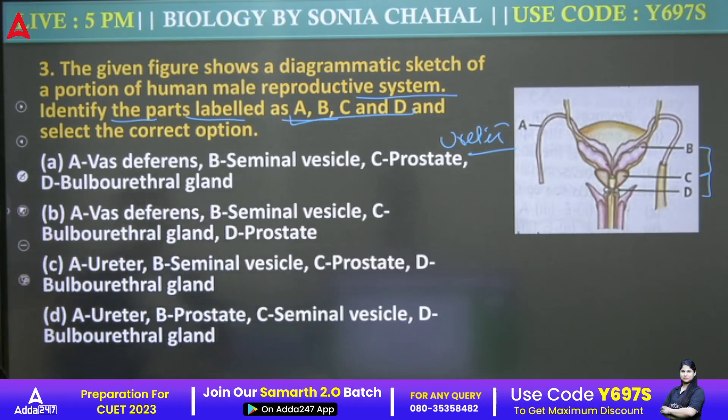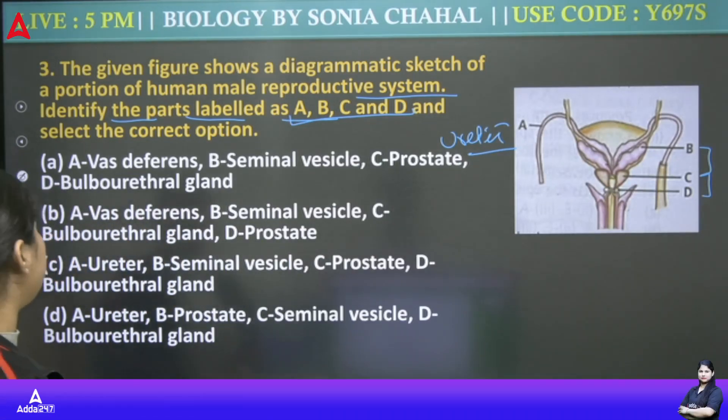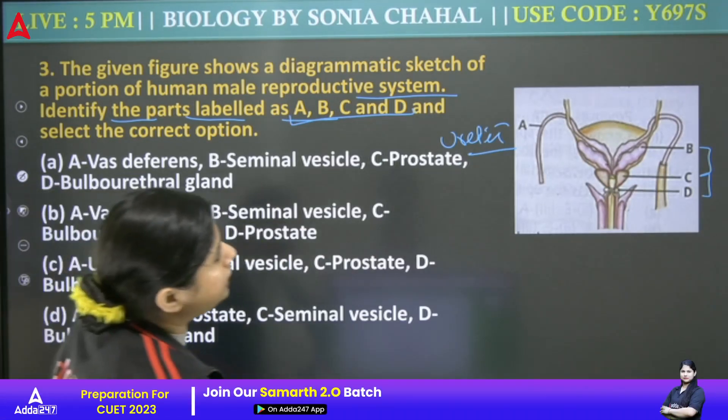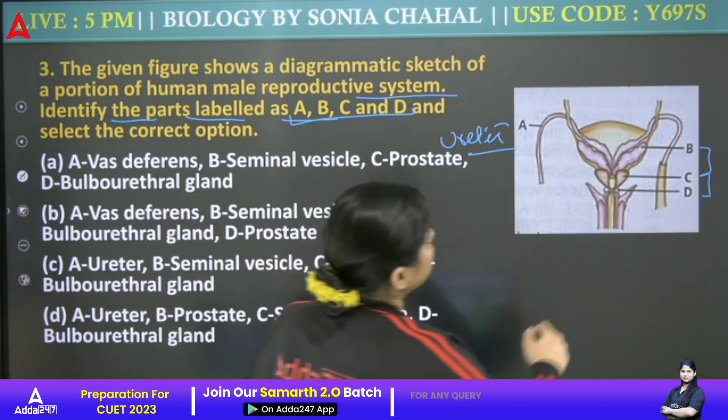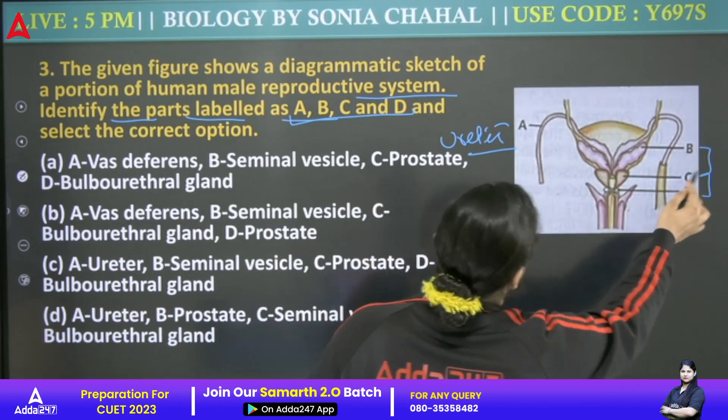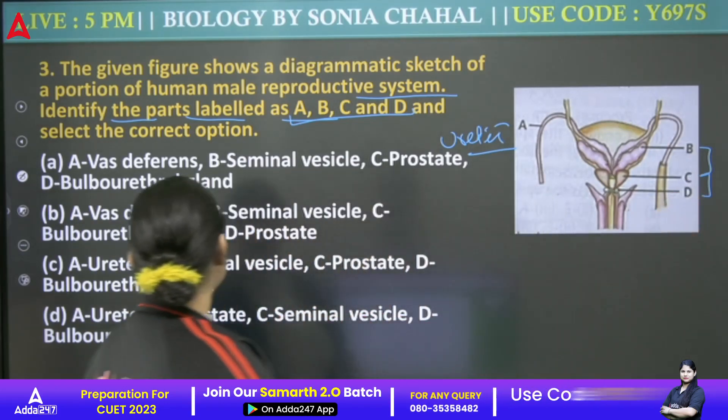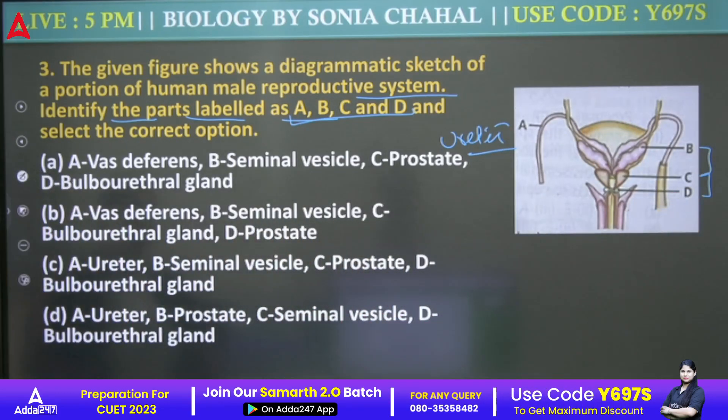So, first of all, we have ureter here. And C is the bulbourethral gland — see where it is.